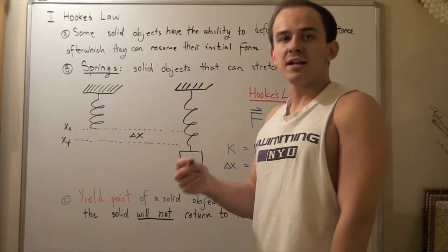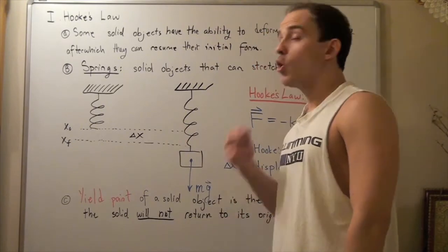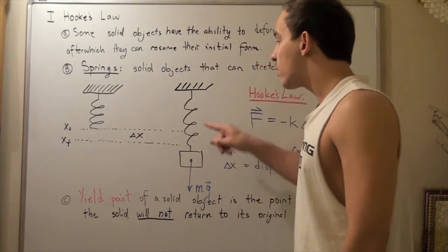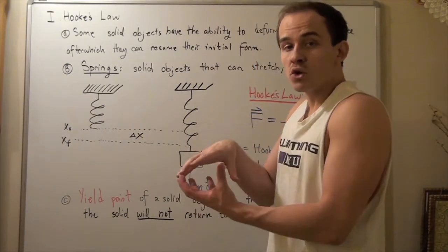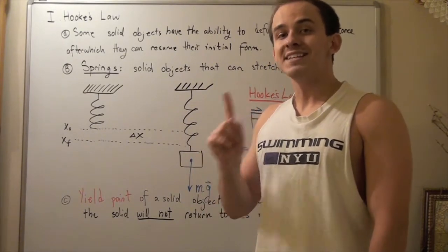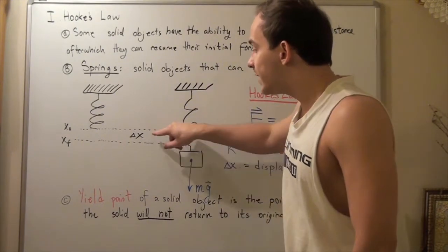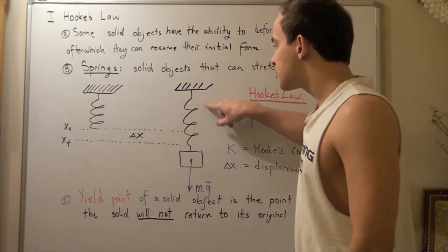We take a mass, some mass with mass m, and we attach it to this end of the spring. What happens? Our spring will displace or stretch a certain amount. My question is, what is the change in displacement and how do you find it? How do you find this distance that our spring stretched?